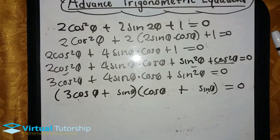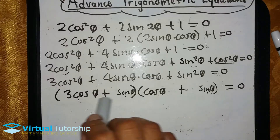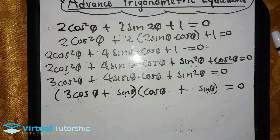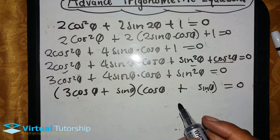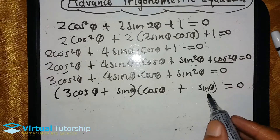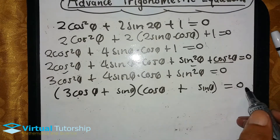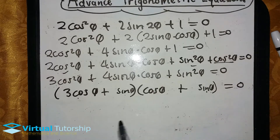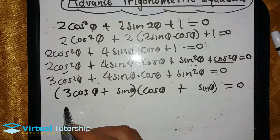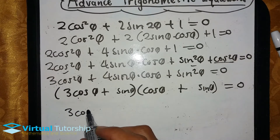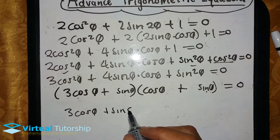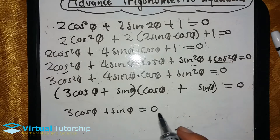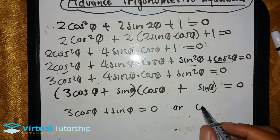The next step is: when solving trigonometric equations, we have two brackets multiplied together equal to zero. So we apply the zero factor law, which states that when two brackets are multiplied and the result equals zero, then one of the brackets must be equal to zero.